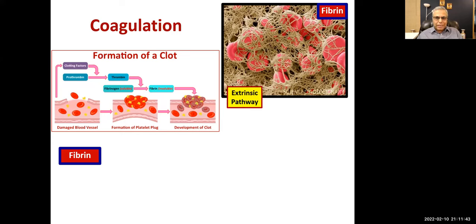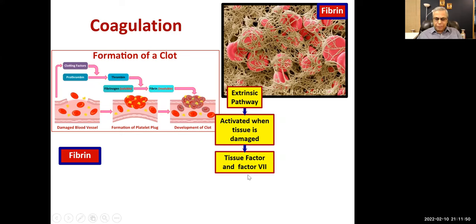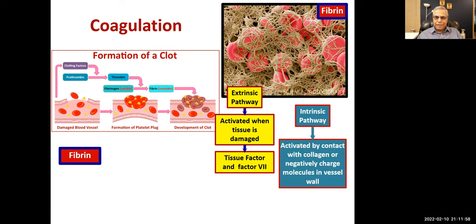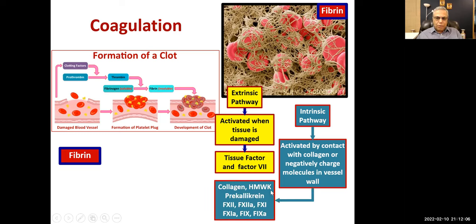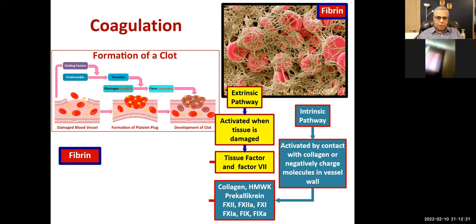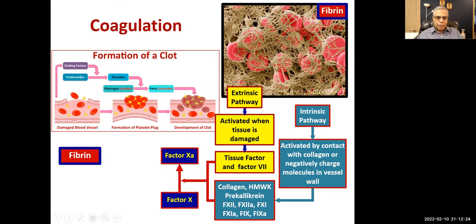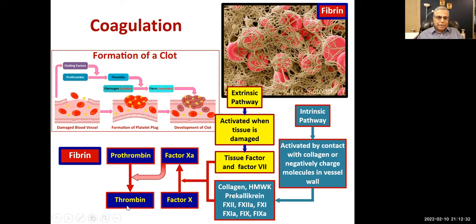The extrinsic pathway is activated when there is tissue damage; it starts through tissue factor and factor VII, then goes to the common pathway. The intrinsic pathway involves many clotting factors activated by contact with collagen or negatively charged molecules in the vessel wall — factors XII, XI, X, IX — all leading to activation of factor Xa, which converts prothrombin to thrombin, and then fibrinogen to fibrin.